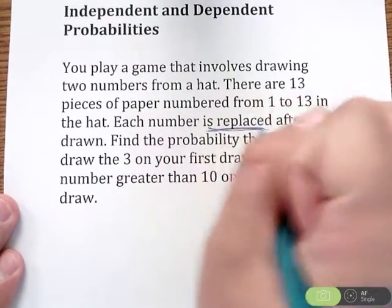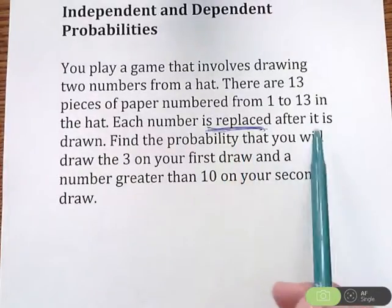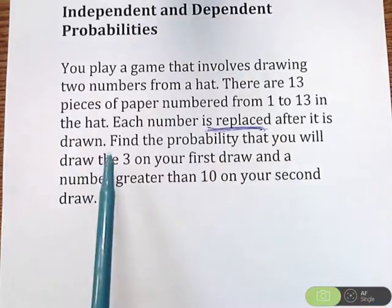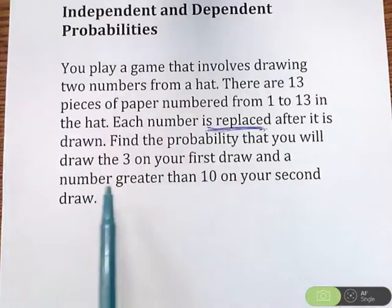Now in all these problems, I think the replacement, whether you are replacing or you're not, is going to be the key thing. So each number is replaced after it is drawn. Find the probability that you will draw three on your first draw and a number greater than 10 on your second draw.